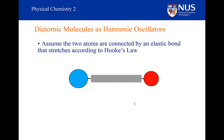We've got two atoms that are connected by an elastic bond that can stretch according to Hooke's law, so we're going to treat it like a spring. You may well have done an experiment where you have a spring and put weights on it. The spring stretches as you apply more weight. You would find that the stretching is proportional to the force you are applying — this is Hooke's law. The force applied is mg, the mass times the acceleration due to gravity.